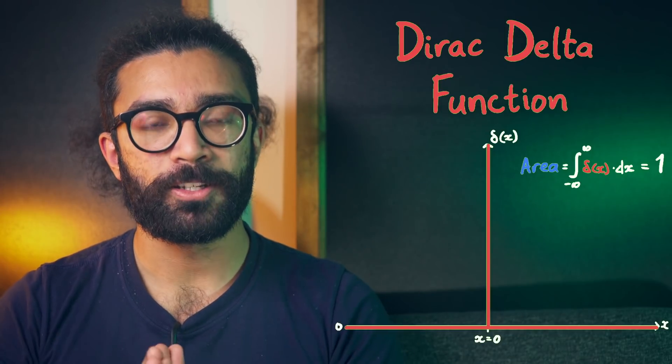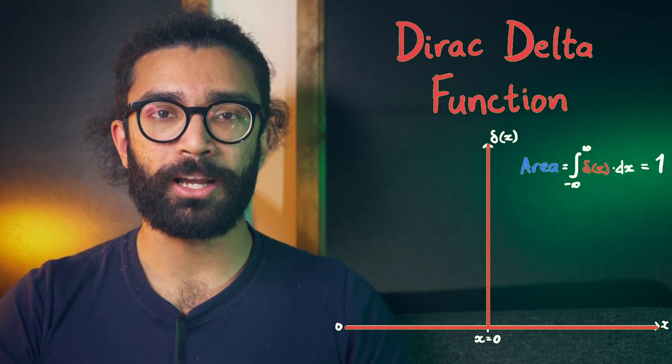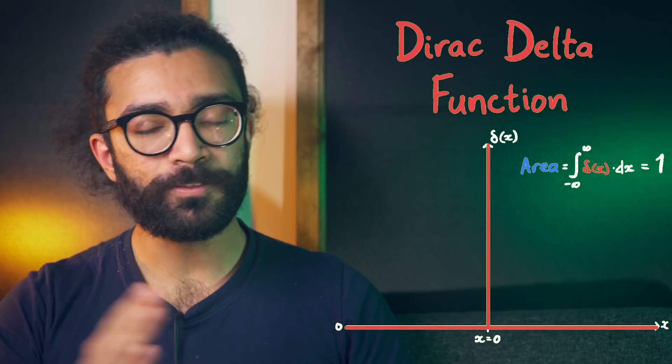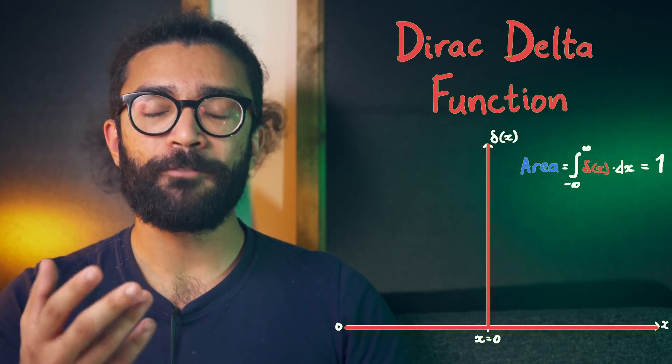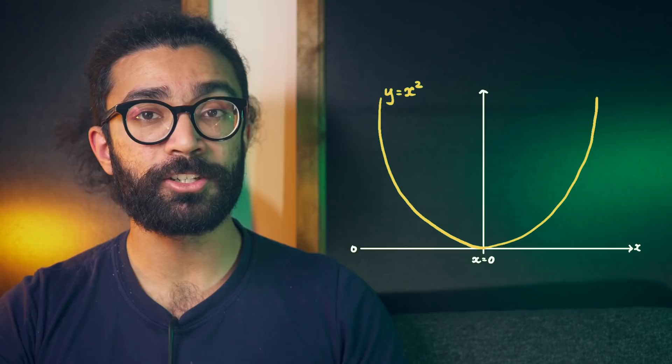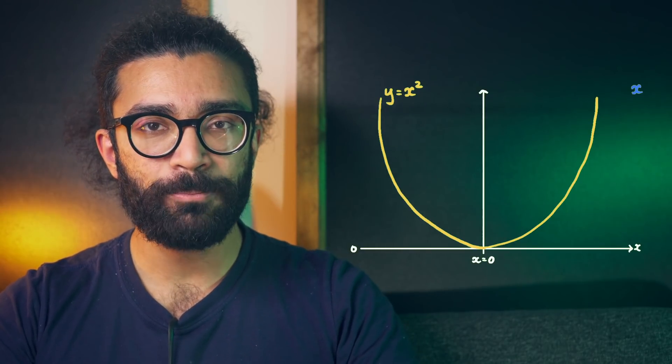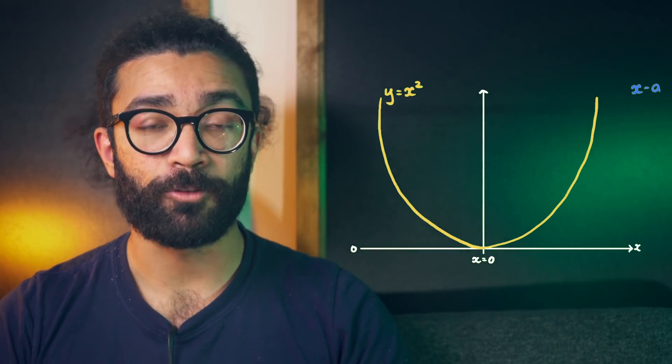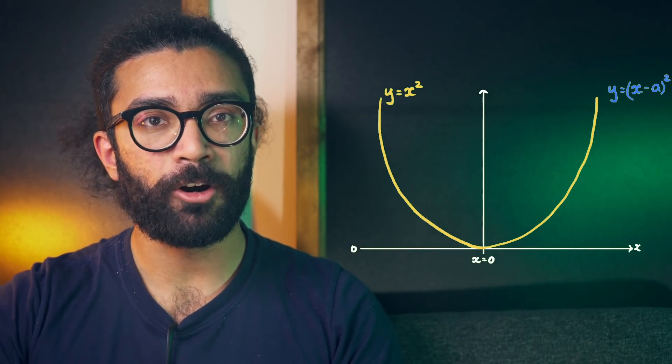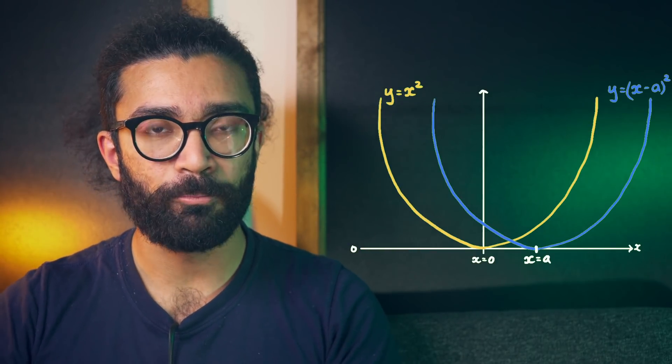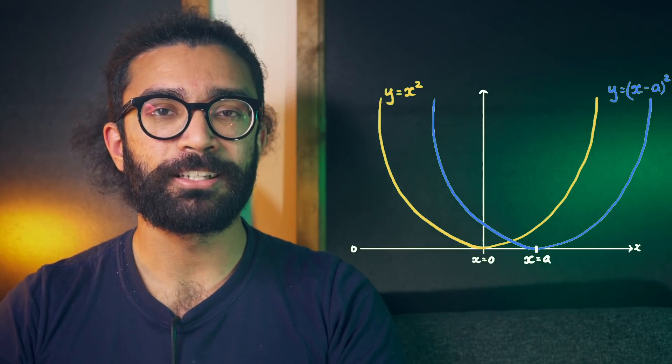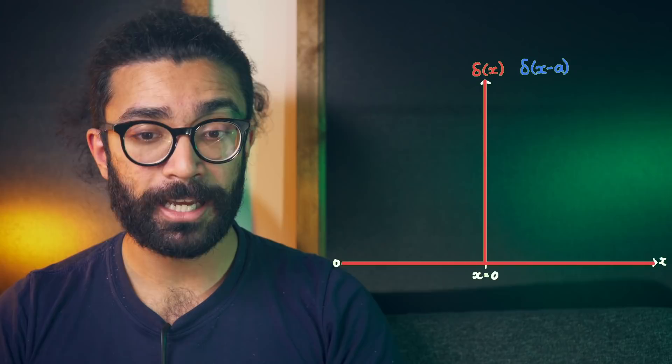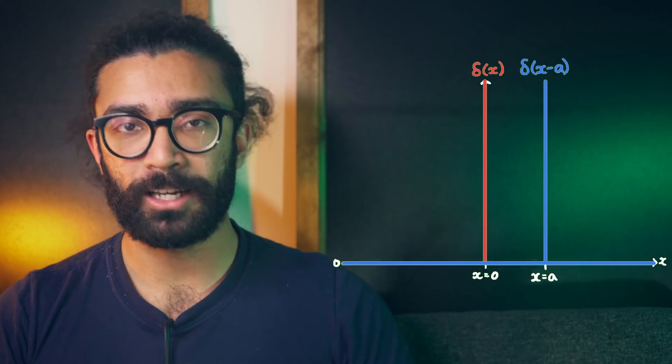Now here's a separate point. The delta function does not actually need to spike specifically at x equals zero. We could actually move the spike to a different x position. If you're familiar with how to modify functions this way, you may know that if you take the dependent variable x and then subtract some quantity, let's say a, from it, that the graph of the function of x minus a shifts by the same amount a. We could do the same with the delta function, so that we have delta of x minus a, and then this function spikes at x equals a, instead of x equals zero.